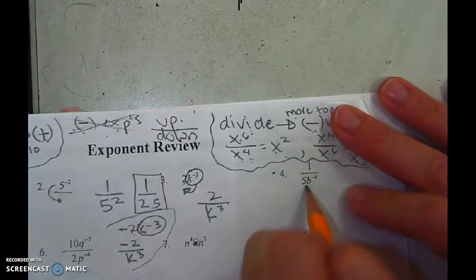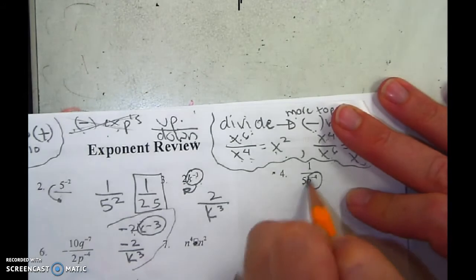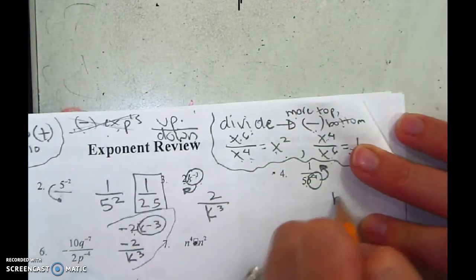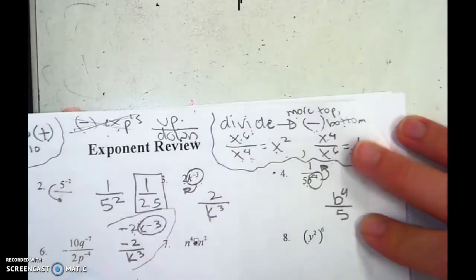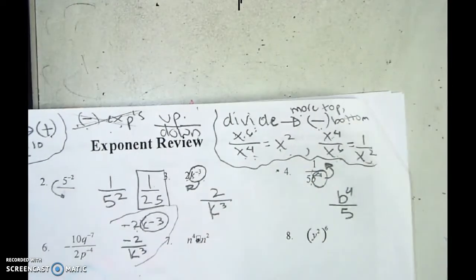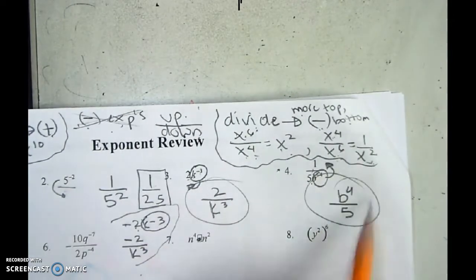Next problem. They're both down. 5's fine. b needs to go up. Once it goes up, it's positive. And I can put the 1, but 1 times anything is itself, so I'm good to go.